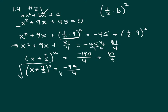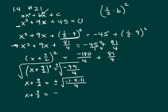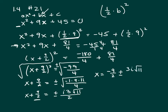Now take the square root of both sides, giving plus or minus. So x plus 9 halves equals plus or minus the square root of negative 1 times 9 times 11, all over 4. The square root of negative 1 is i, the square root of 9 is 3, and you still have a square root of 11 in the top with a 2 in the bottom. Subtracting 9 halves from both sides gives x equals negative 9 halves plus or minus 3i times the square root of 11, all over 2. So those are your two answers.